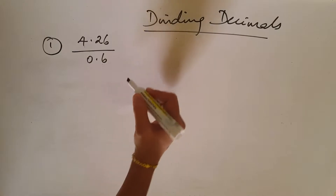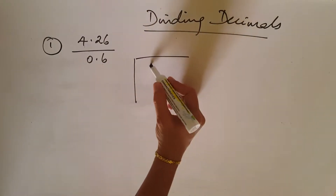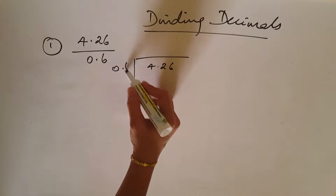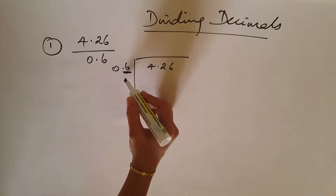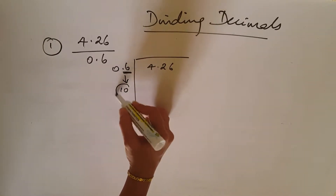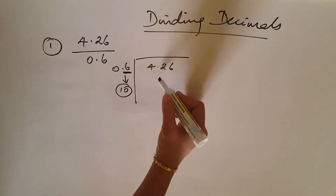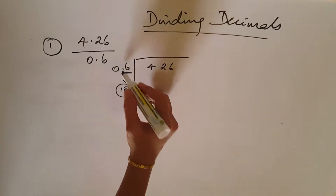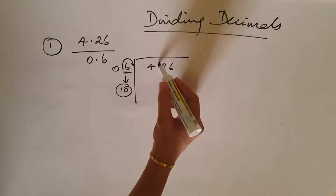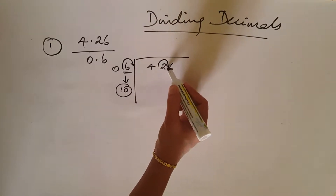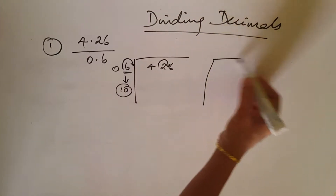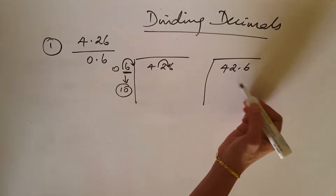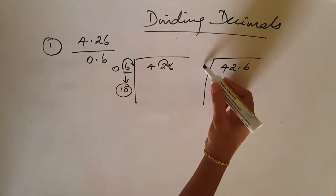In 4.26 divided by 0.6, the divisor 0.6 has one decimal digit, so we multiply both by 10. This moves the decimal, giving us 42.6 divided by 6.